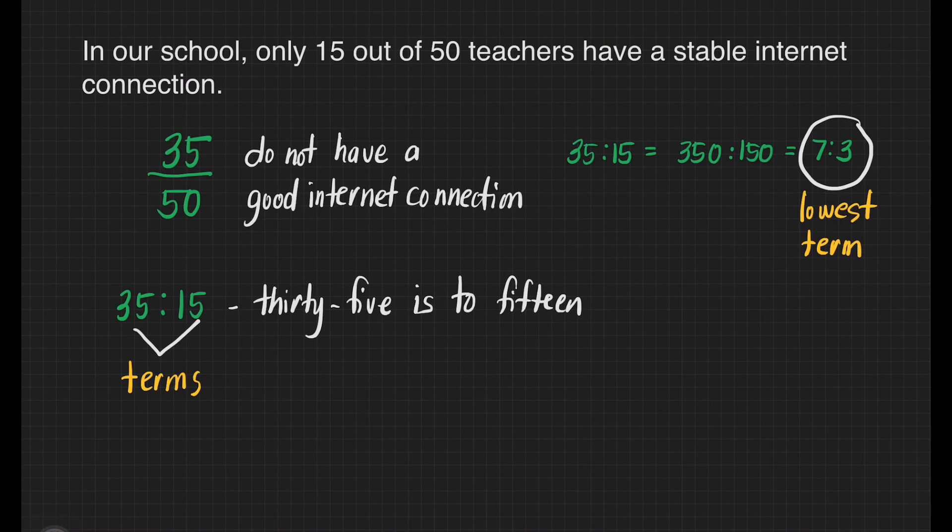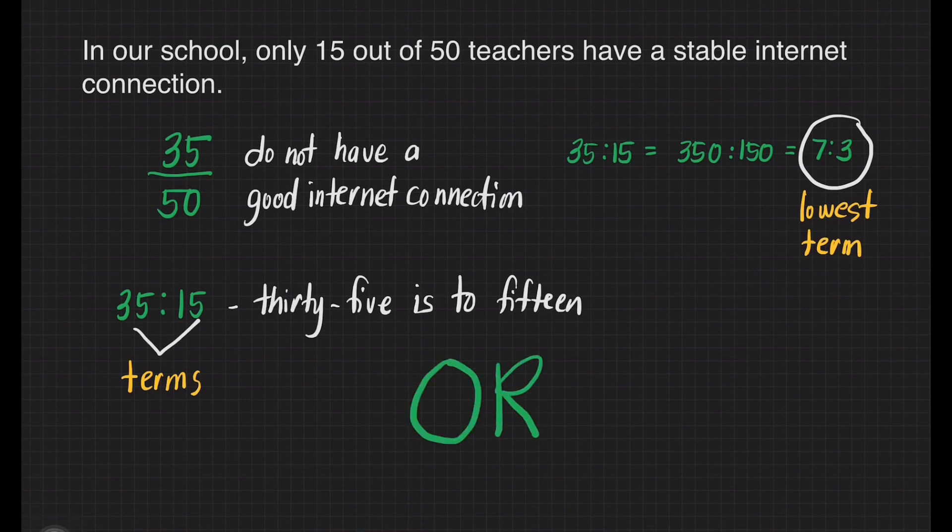Why is it considered the lowest term? Because the only factor that the terms have in common is 1. We also have to note that the order in which a comparison or ratio is expressed is important. The quantity which is mentioned first in the comparison must be written first in the ratio.